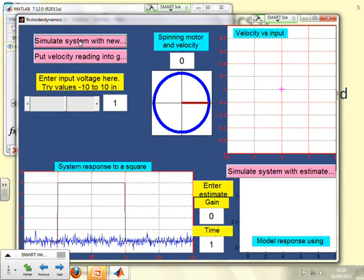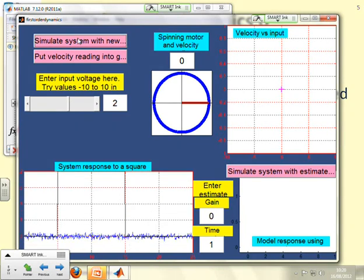Let's put in 2 volts. Simulate the system with that. Again, the system's not moving. So even with 2 volts, nothing's happening. But I'm going to put this velocity reading into my graph. There is another pink box. The pink square. So we can see what's happening.